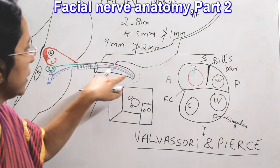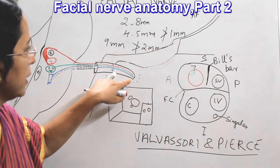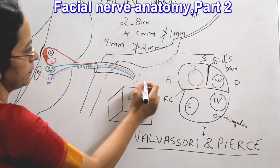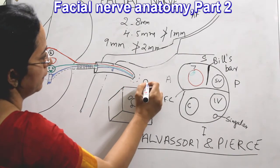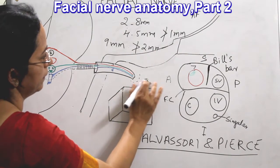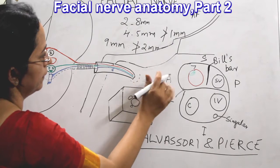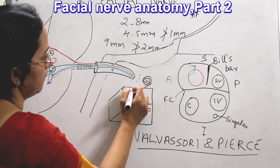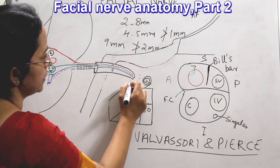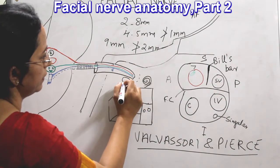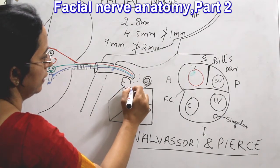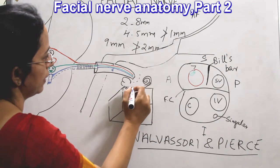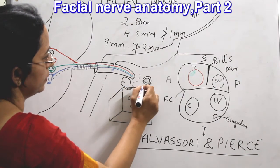From the CP angle through the internal acoustic canal, it reaches up to the fundus. Here comes your cochlea, your semicircular canals — superior, posterior and lateral semicircular canal — and here is the vestibule.